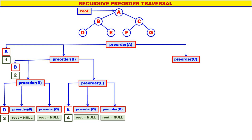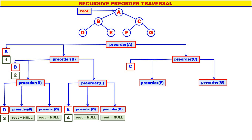Let us come to pre-order of C. C is not equal to null, therefore display C. Left of C is F, therefore pre-order of F. Right of C is G, therefore pre-order of G. C will be the fifth one to be displayed.